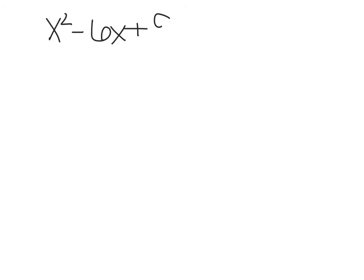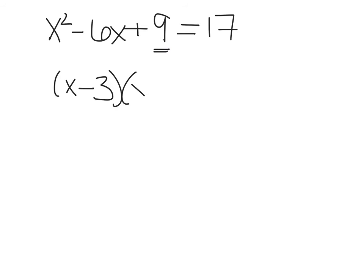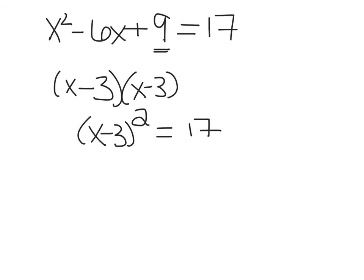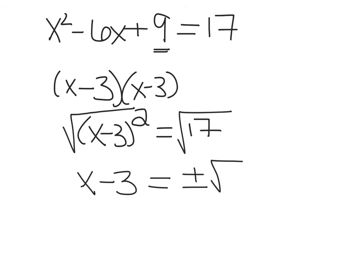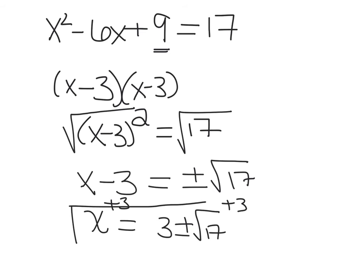Now you have x squared minus 6x plus 9 equals 17. Factor the left side — it is a perfect square — to get (x minus 3) squared equals 17. Take the square root of both sides, remembering the plus or minus: x minus 3 equals plus or minus the square root of 17. Add 3 to both sides: x equals 3 plus or minus the square root of 17.